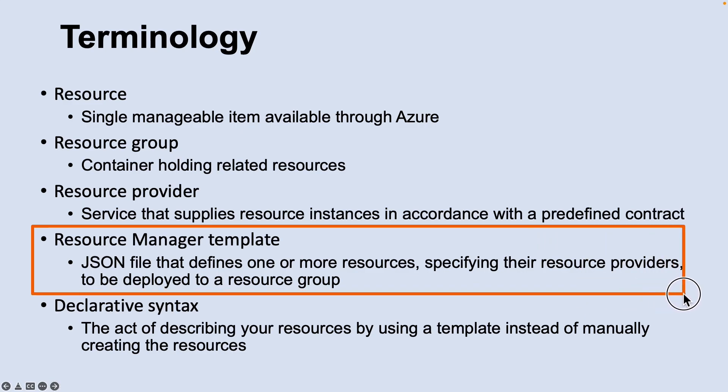Another terminology to understand is the Resource Manager template, which is a JSON (JavaScript Object Notation) file that defines one or more resources to deploy to a resource group. It also defines the dependencies between the deployed resources. The template can be used to deploy the resources consistently and repeatedly.